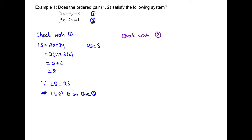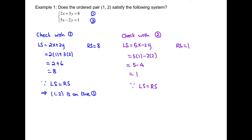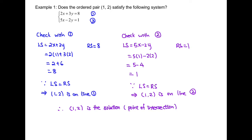Next, we have to check with equation 2. Once again, the left-hand side equals 5x − 2y. Substituting 1 into x and 2 into y, we get 1. The right-hand side of equation 2 is already 1. Since left-hand side equals the right-hand side, therefore (1, 2) is also on line 2. Since the point (1, 2) is on both lines, therefore (1, 2) is the solution, which is the point of intersection of those two lines of the system.